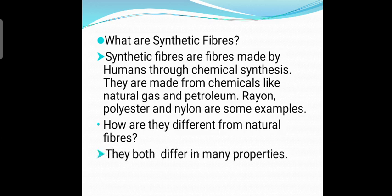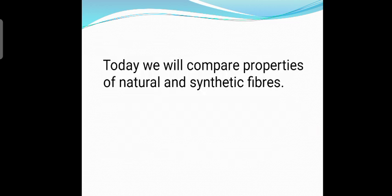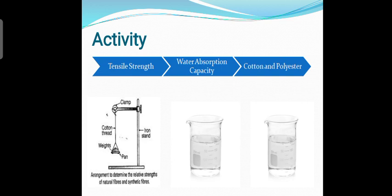These are different from natural fibers in many properties, so today we will compare the properties of natural and synthetic fibers. For understanding this, we will perform one activity. In this activity, we will compare the tensile strength and water absorption capacity of two fabrics — cotton as well as polyester. You can pause the video to perform the activity. Pour equal amounts of water in the two beakers using the measuring cylinder. Soak the pieces of cotton and polyester in it. After five minutes, take out the pieces, gently squeeze the extra water into the beaker, and measure the leftover water using the measuring cylinder. Record in your notebook.